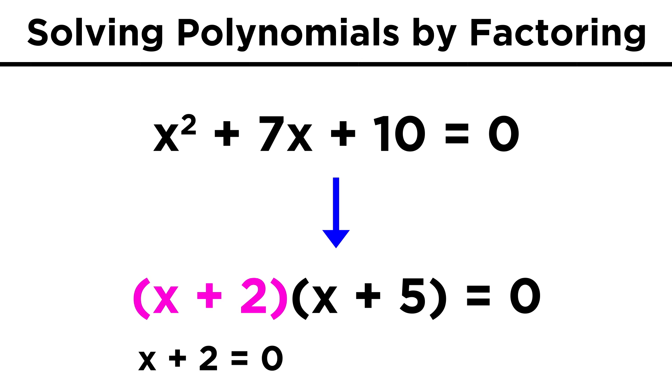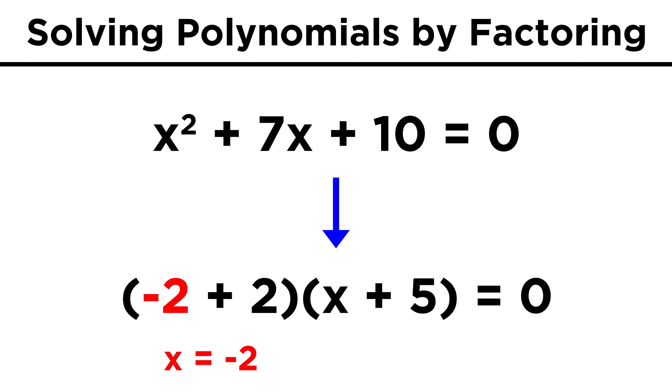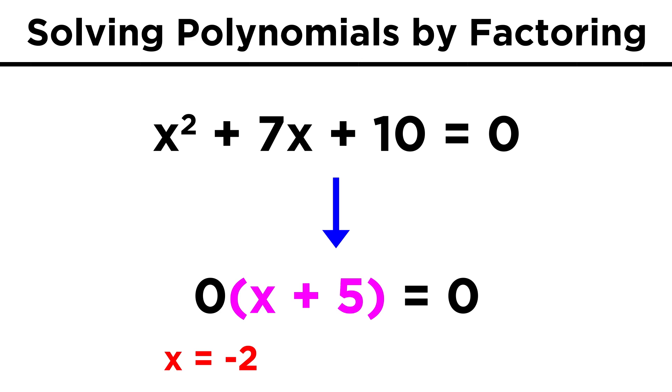That means that if x is negative two, this first term is zero, and then it doesn't matter what this other term is, because zero times anything is zero.